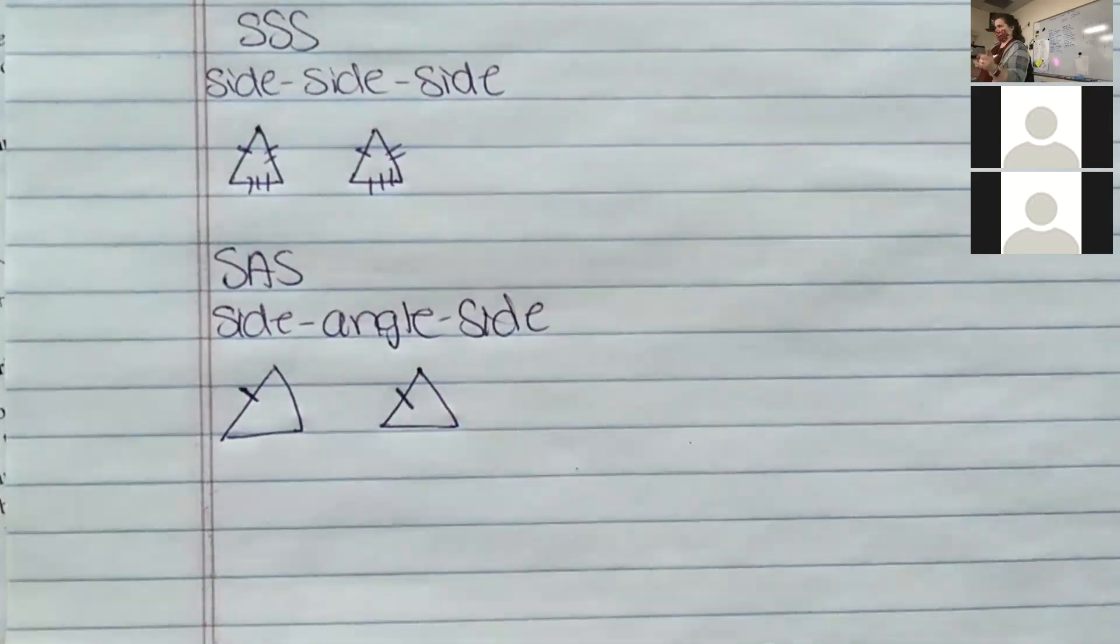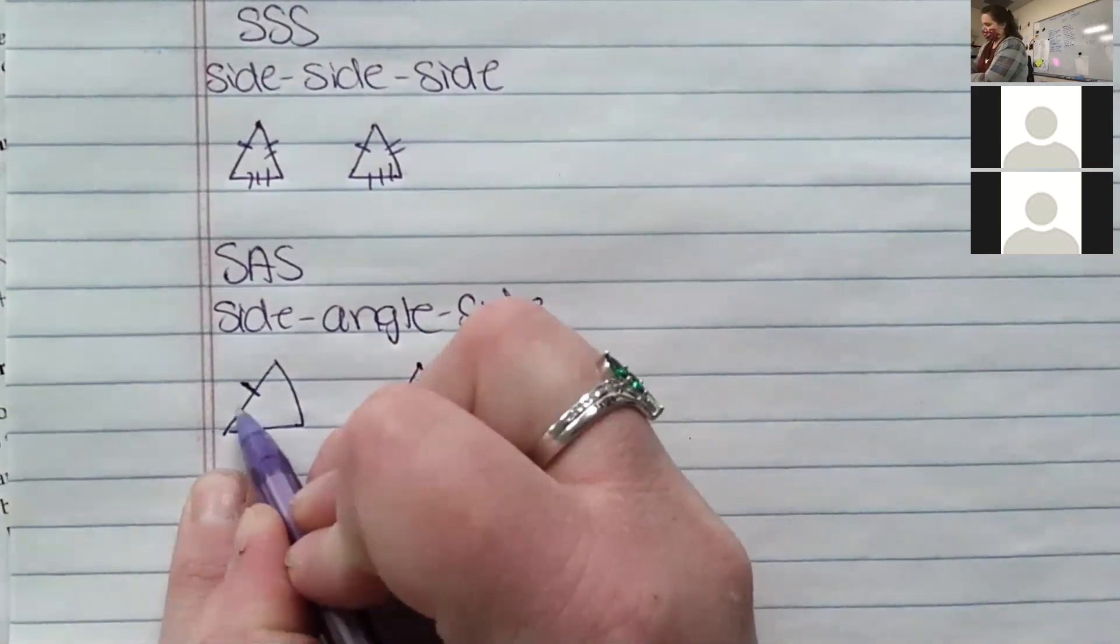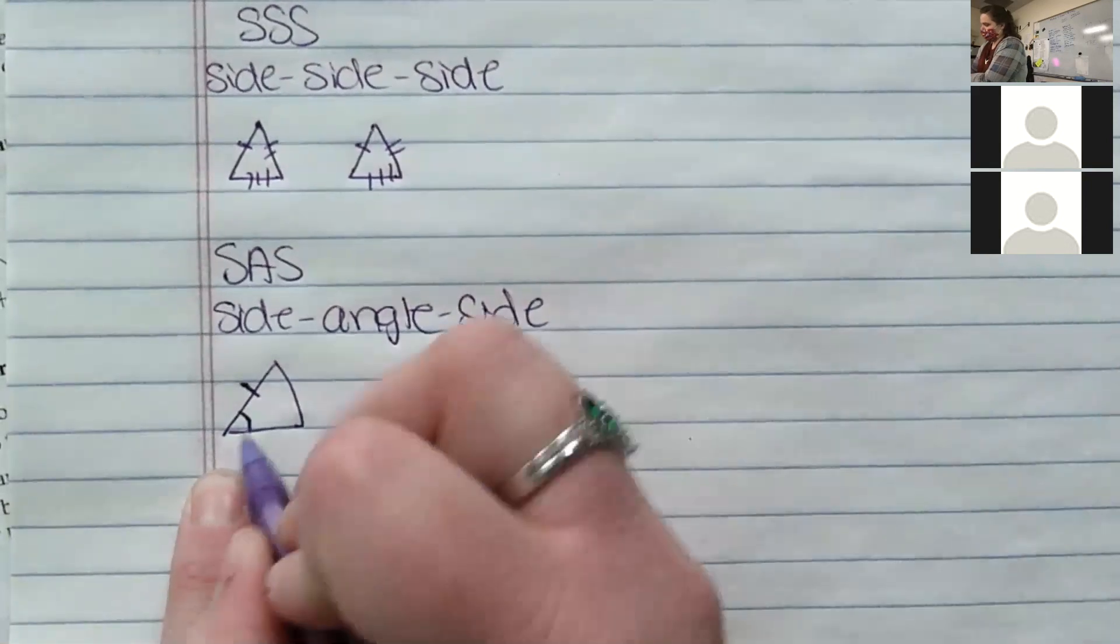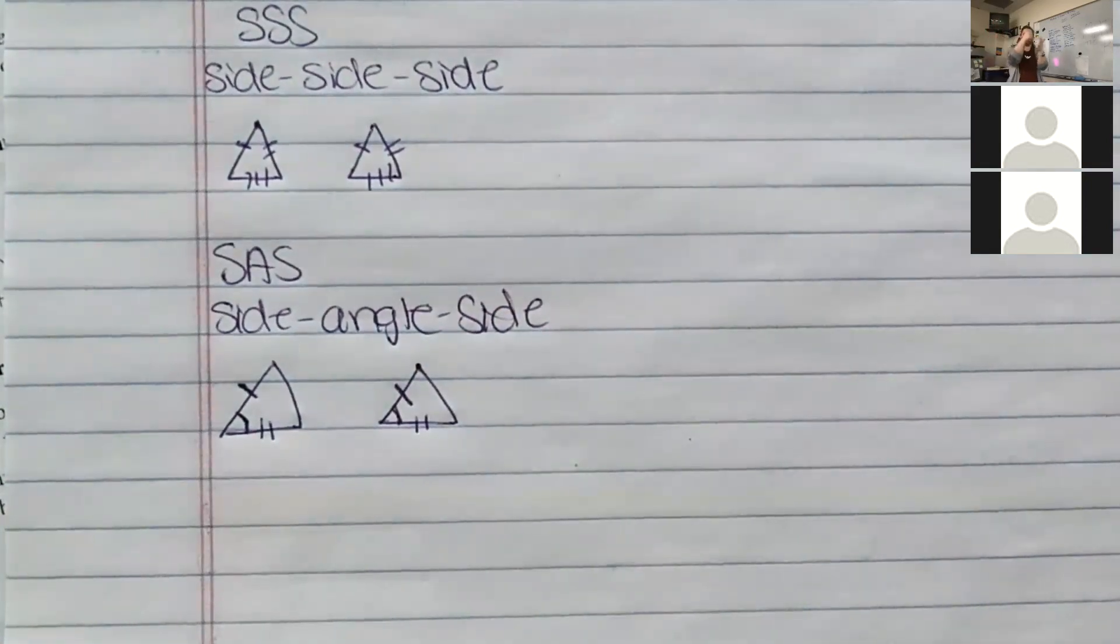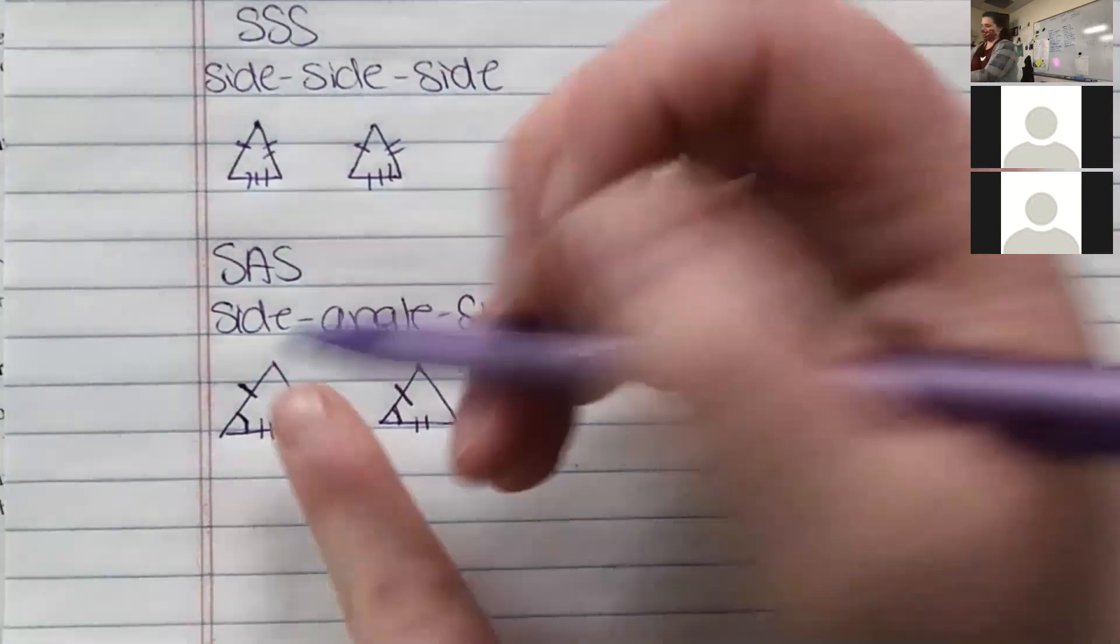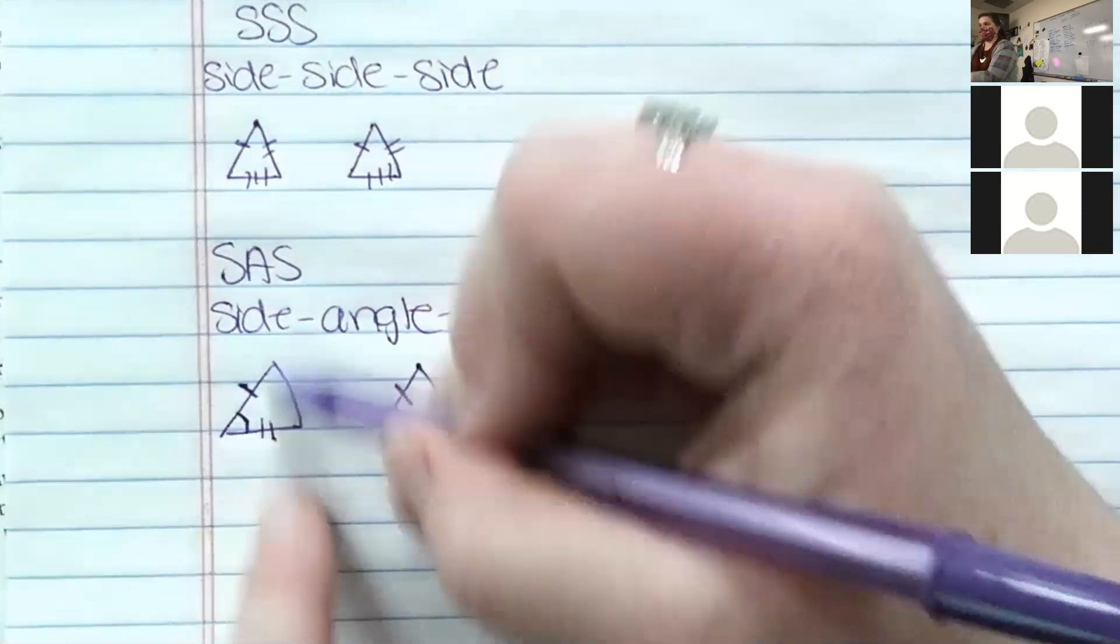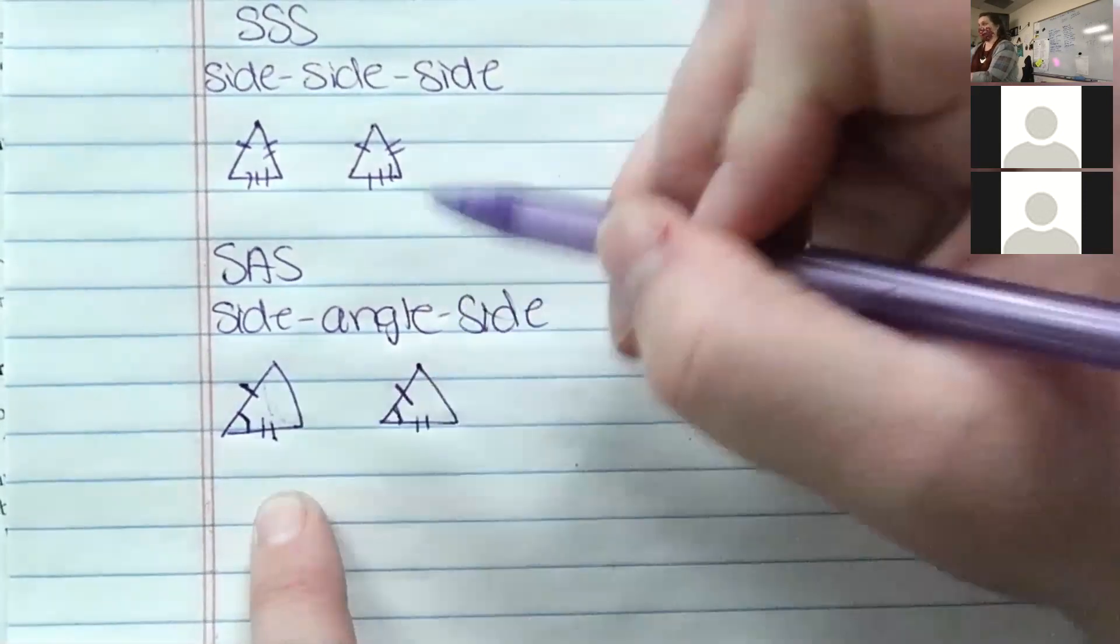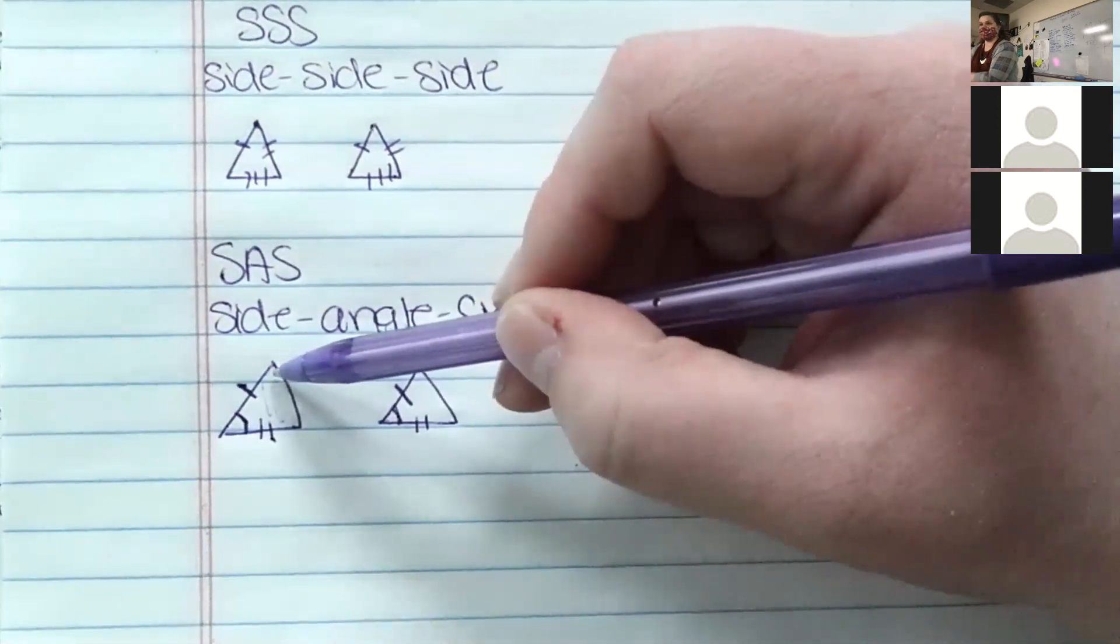Now the included angle between the two sides, so this angle would have to be congruent to this one, and then this side would have to be congruent to that side. So it has to be side-angle-side. When you read it off, you go oh, side-angle-side, that angle has to be in between those two sides in order for this to work. That angle cannot be over here. Does that make sense?